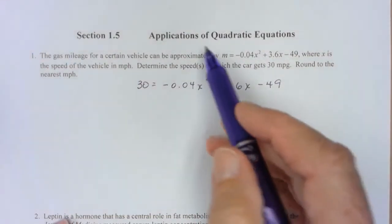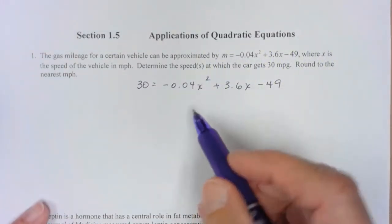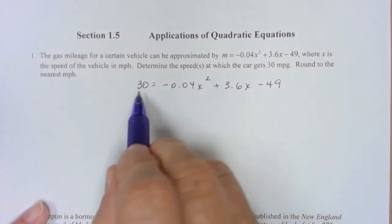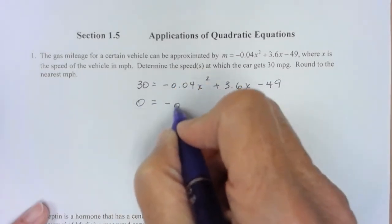Because remember, this is applications of quadratic equations. So in order for me to solve a quadratic equation, I have to get all terms over to one side. So since all I need to do is move the 30 over, I think I'll do that by subtracting.